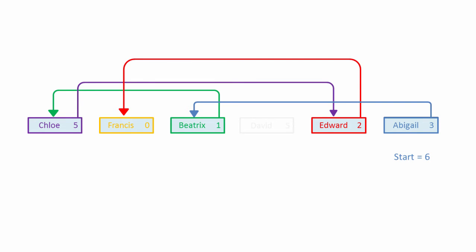What then if we want to remove Abigail? Abigail is slightly different because Abigail is the starting item. Abigail was pointing to Beatrix, item number 3, so all we have to do is make Beatrix the new starting item.